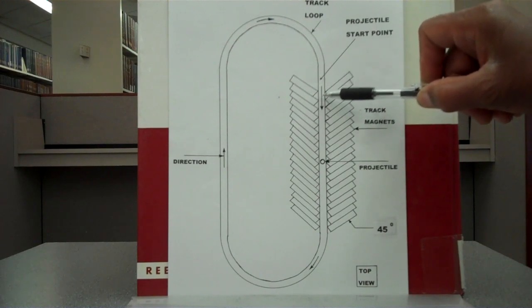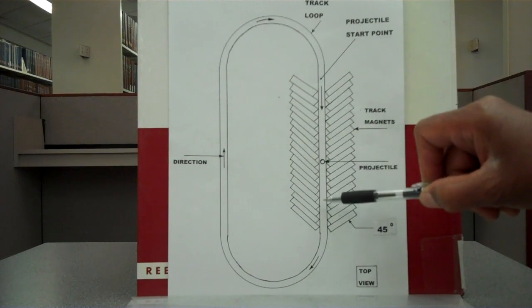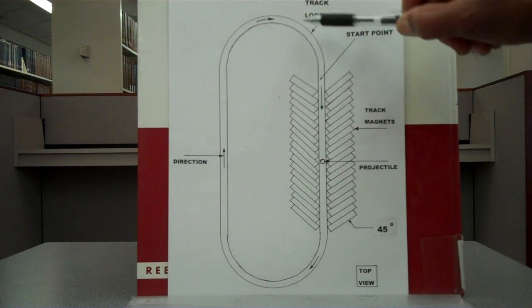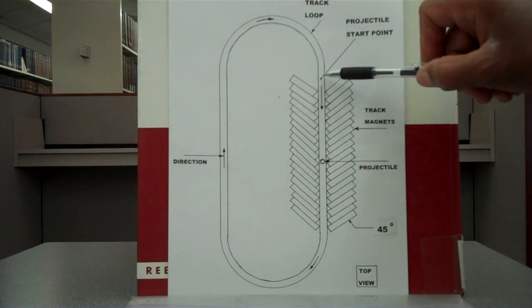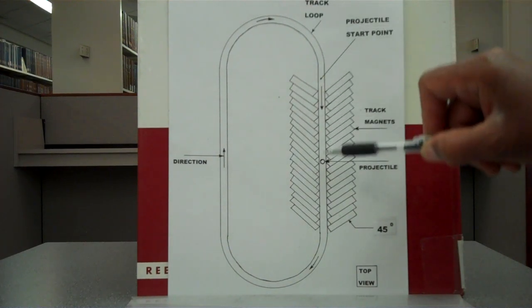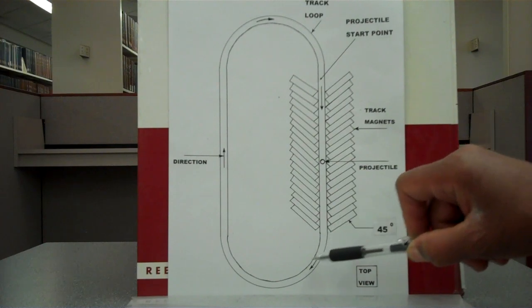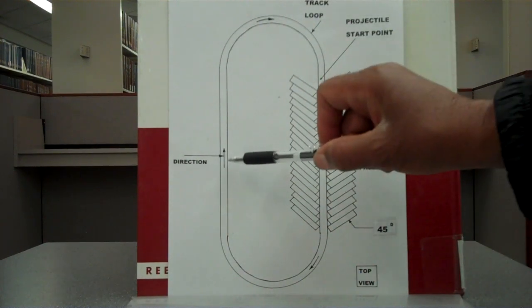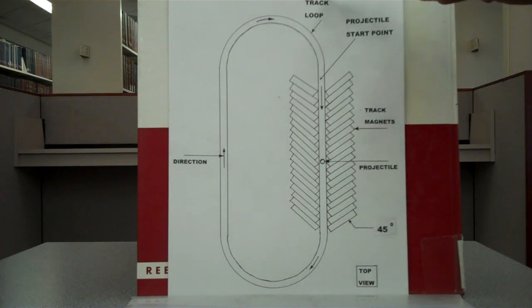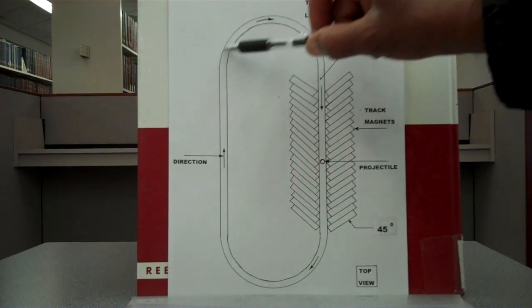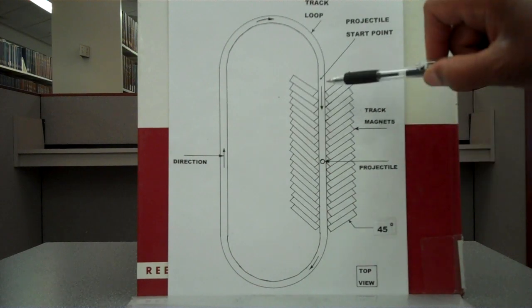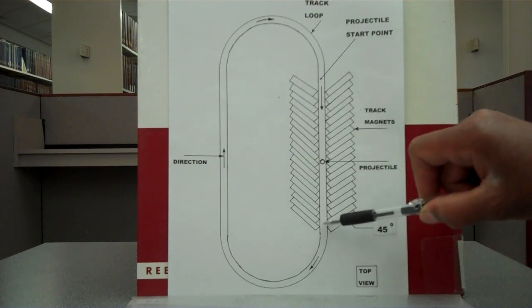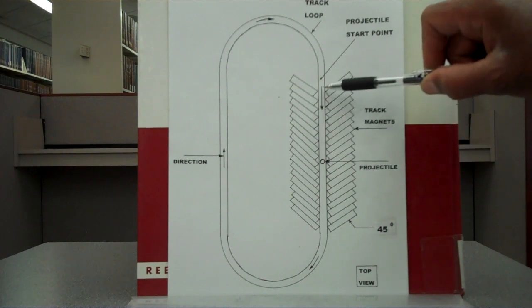The projectile is attracted right back into the magnetic accelerator, exits, goes around, enters - cycling around and around indefinitely. This is the direction, and this is the track loop. It is a closed loop with a linear accelerator.